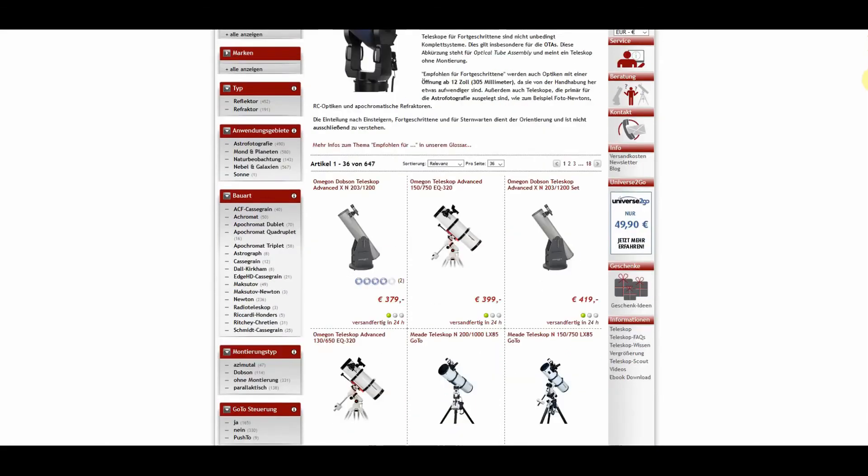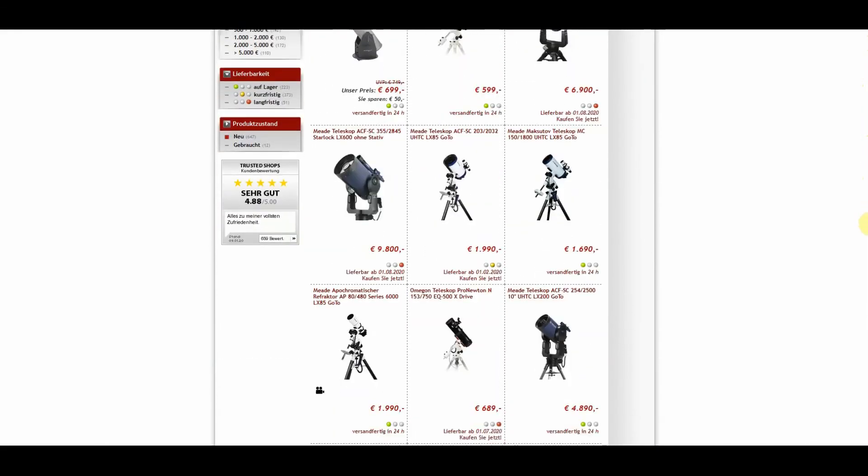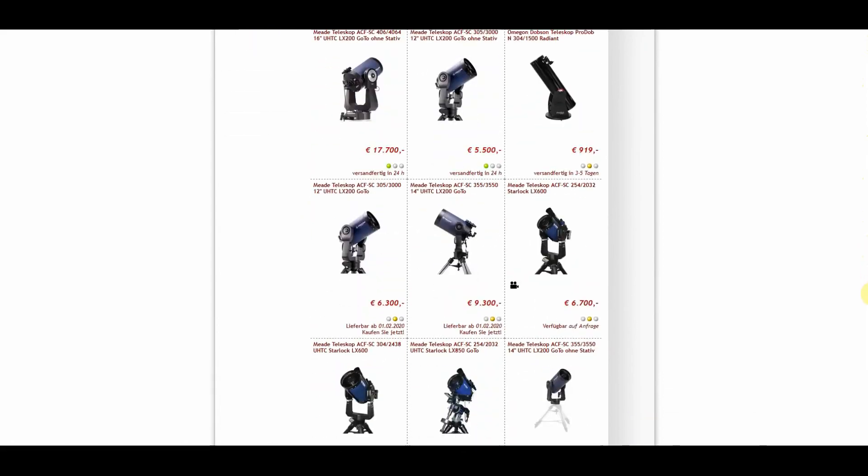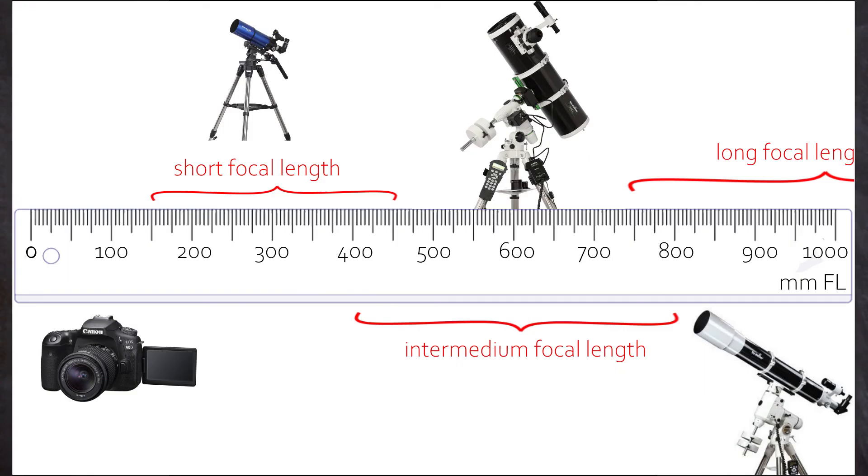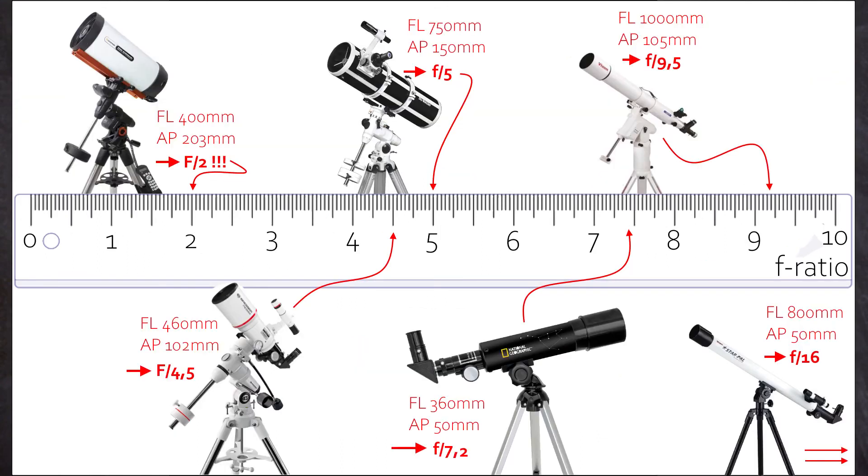So now you are equipped with the first tools to work out the basic optical qualities and capabilities for the thousands of scopes out there. Long and short focal length, wide and narrow aperture, and the resulting fastness of a scope. All in your hands.